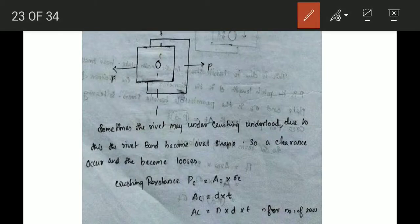The third failure mode is crushing. The oval shape is clear. The crushing resistance Pc = N × D × T × σc, where N is the number of rows.